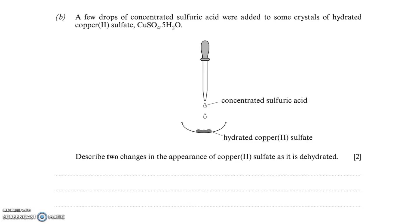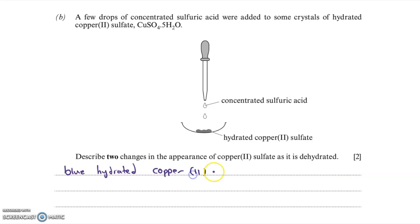Now let's go through question 1B. A few drops of concentrated sulphuric acid were added to some crystals of hydrated copper 2 sulphate, CuSO4·5H2O. The question asks you to describe two changes in appearance as it is dehydrated. Hydrated copper 2 sulphate is blue in colour; when concentrated sulphuric acid — a dehydrating agent — is added, the water is removed and it turns white. Saying that blue hydrated copper 2 sulphate turns white gets you one mark.